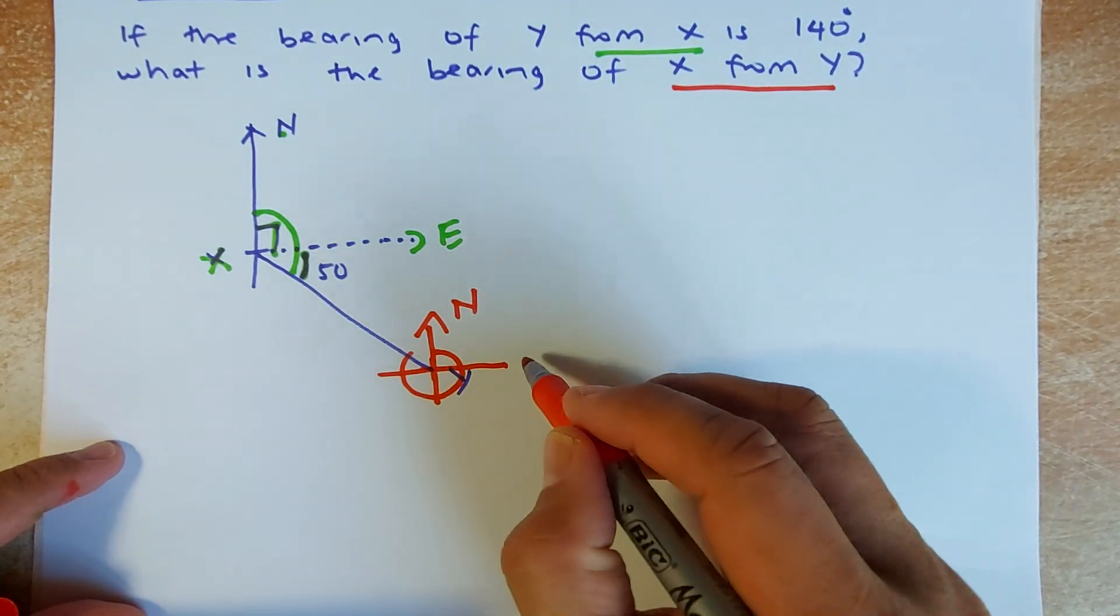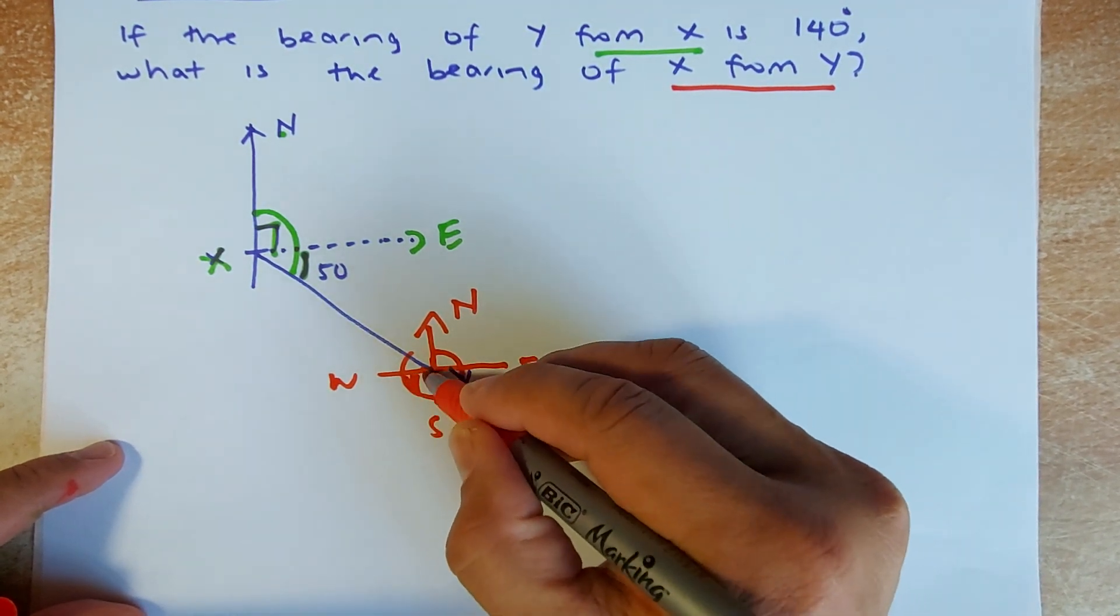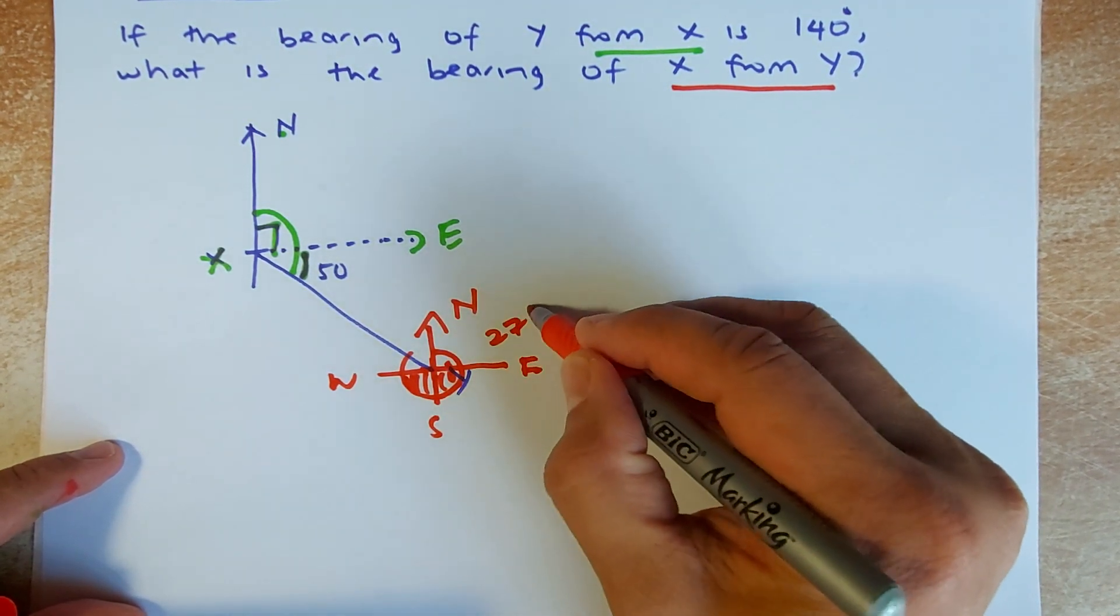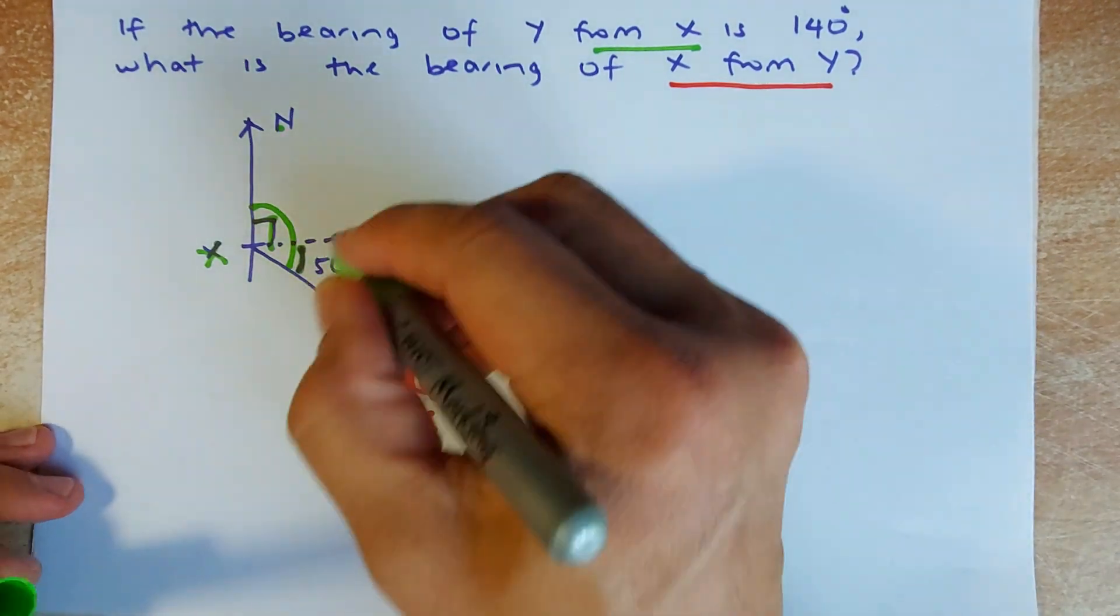We know that this is the east and that's the west and that's the south. That angle here from here to here is going to be 270 degrees. We need to calculate the other angle. This angle here.